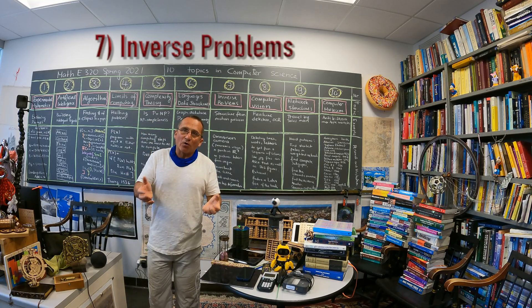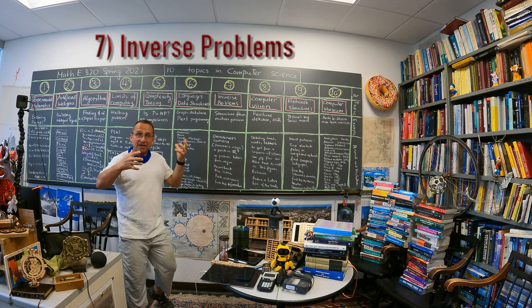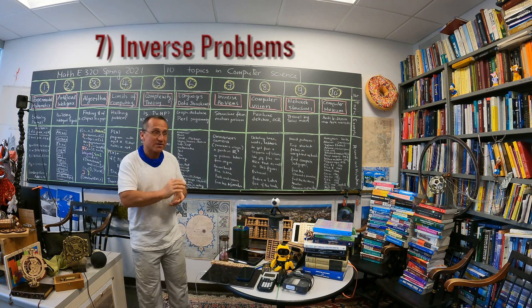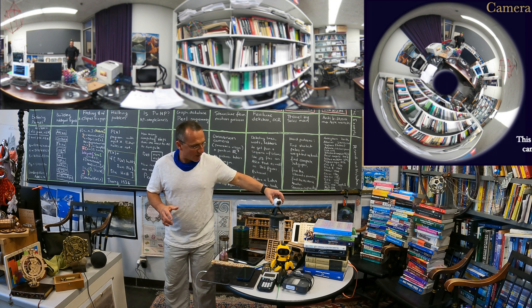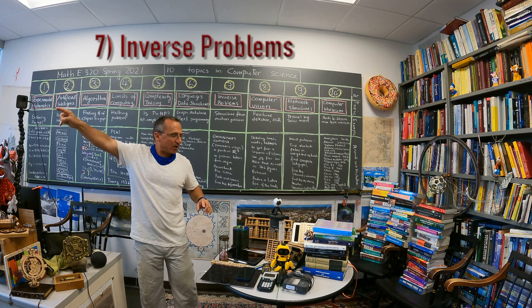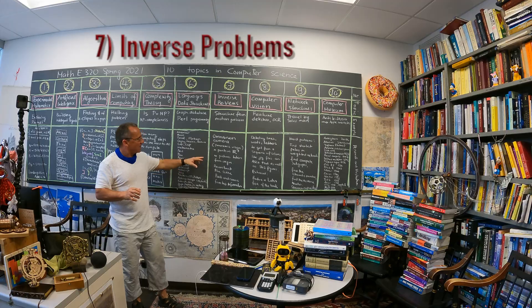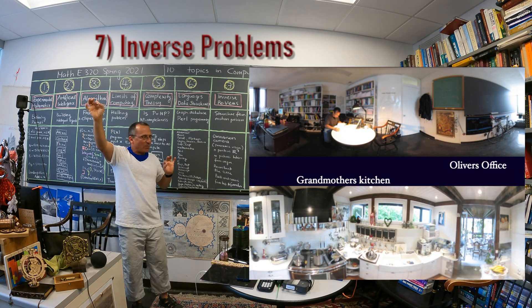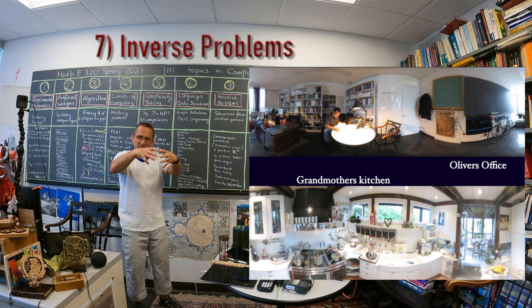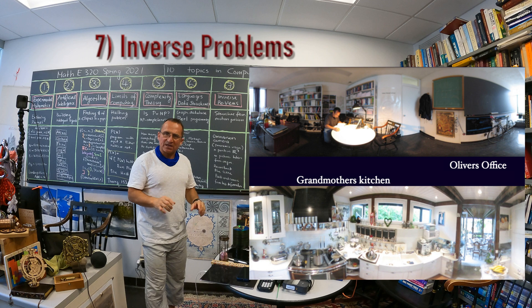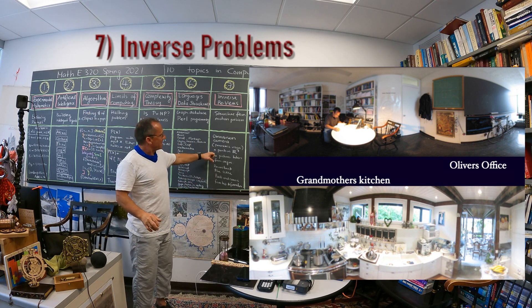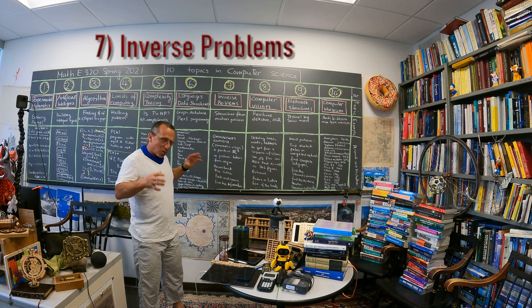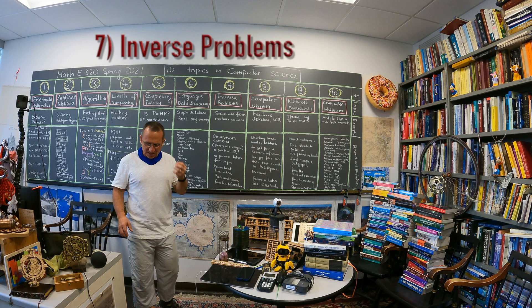The inverse problem is a very core problem in mathematical physics. You have some data, you see some data, and you want to compute things. I and my students have worked on computer vision, especially panoramic vision, using a 360-degree camera. When you have a 360-degree picture, you have endpoints in space whose locations are unknown — you photograph them from the camera, yielding endpoints on your sphere — and from this information, not knowing the camera's orientation or position, you want to construct the scene, the points, and the camera. This is called the structure-from-motion problem — an example of an inverse problem.